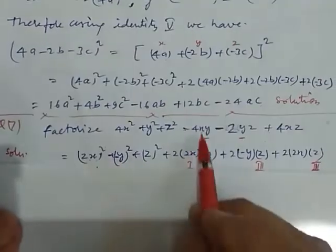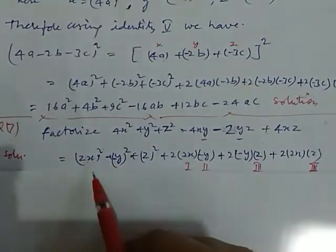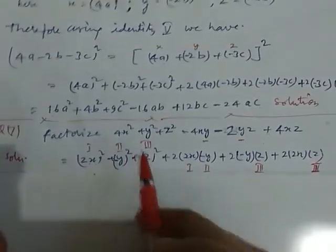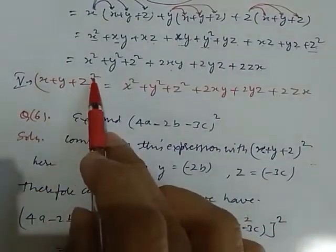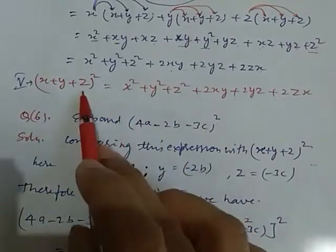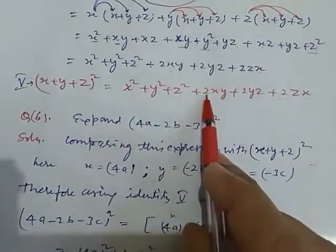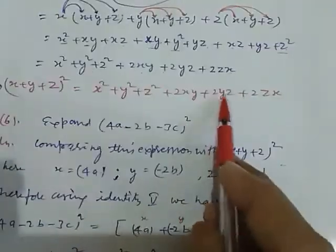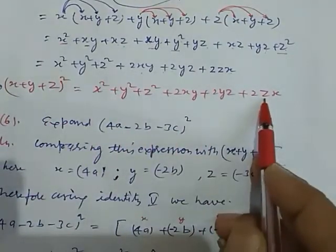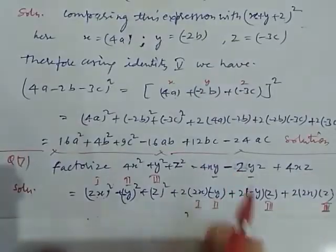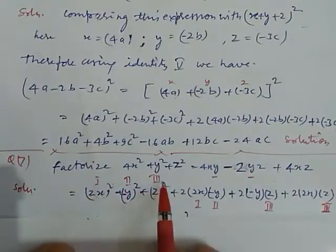With the help of these terms, consider this as first term, this as second term, and this as third term. Because here, x plus y plus z whole square is our identity, and this is the whole square of first term, this is the whole square of second term, and this is the whole square of third term. And this is twice first and second term, this is twice second and third term, and this is twice third and first term. So, by this way, we write here and consider these three as first, second, third term.